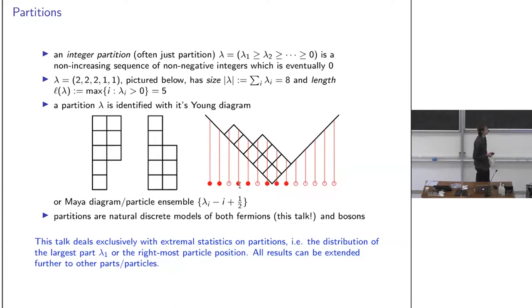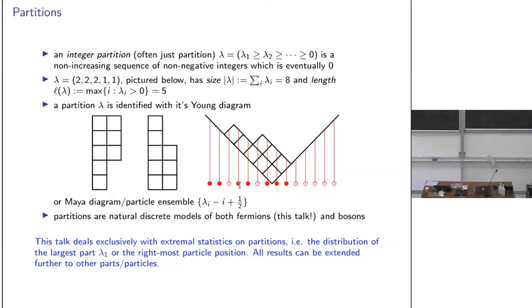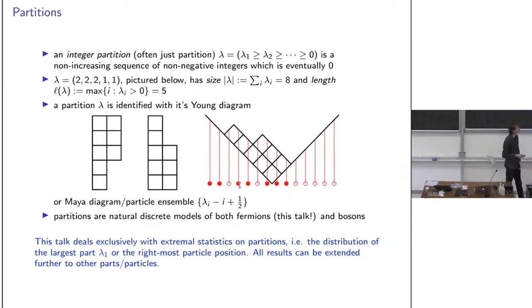Throughout this talk, we look at extremal statistics: if you take a random partition, you look at the distribution of the rightmost particle — the largest part, λ₁. Generalizations include looking at the joint law of the first few particles together, or bulk behavior, but the focus here is on λ₁.